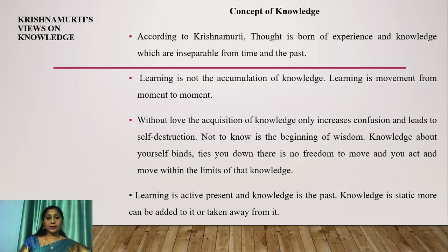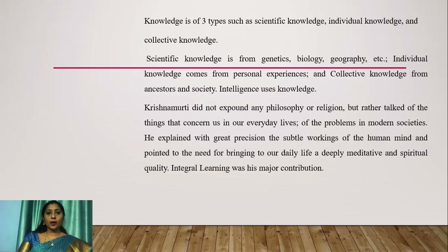Knowledge about yourself binds and ties you down; there is no freedom to move, and you act within the limits of that knowledge. Learning is active and present, while knowledge is the past. Knowledge is static — more can be added to it or taken away from it. Knowledge is of three types: scientific knowledge, individual knowledge and collective knowledge. Knowledge comes from genetics, biology, geography etc.; individual knowledge comes from personal experiences; and collective knowledge from ancestors and society. Intelligence uses knowledge. Krishnamurti explained the subtle workings of the human mind and pointed to the need for bringing a deeply meditative and spiritual quality to daily life. Integral learning was his major contribution.